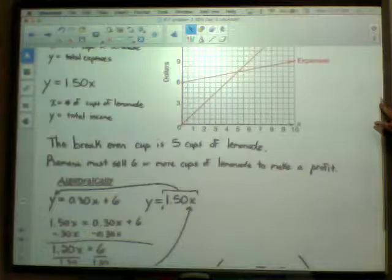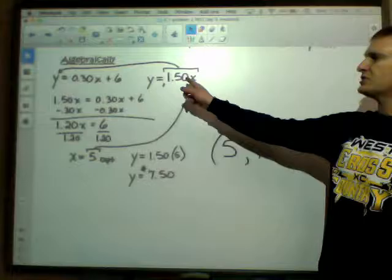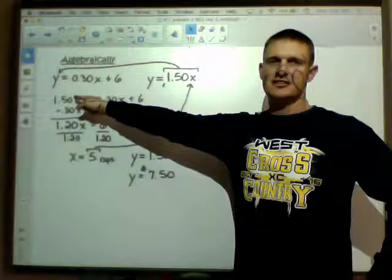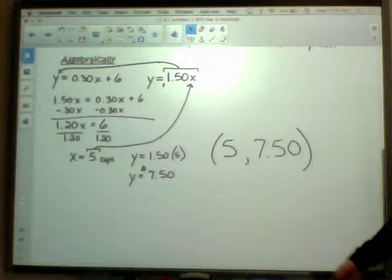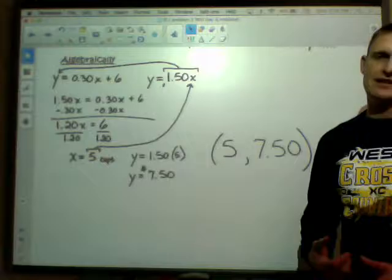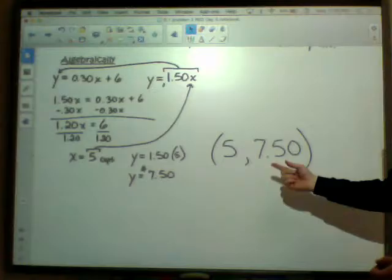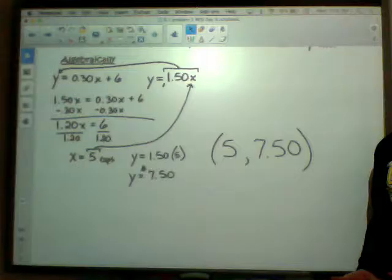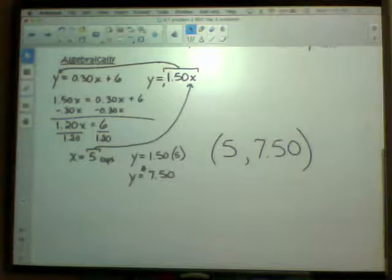If you want to solve that algebraically, you take those two equations you wrote above and use substitution to substitute one equation into the other. So y equals one point five X - substitute that in to replace the Y, and you have an equation with just X's. You solve for X and get five cups, which is exactly what our graph said. Substitute that five back in - one point five times X - and we get seven dollars and fifty cents. The five is the number of cups we have to sell, and when we have $7.50 worth of income, we're also going to have $7.50 worth of expenses.